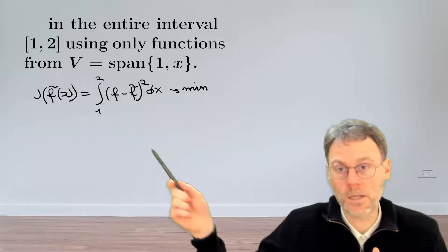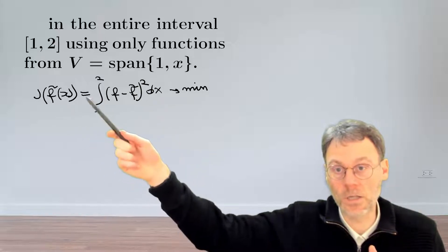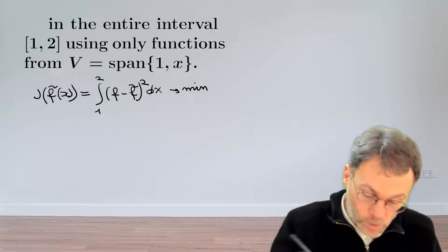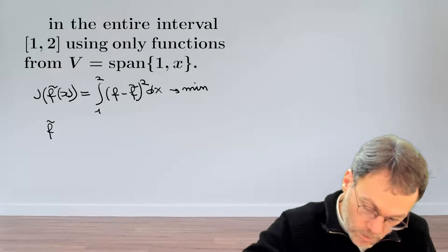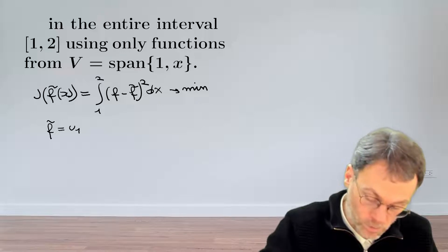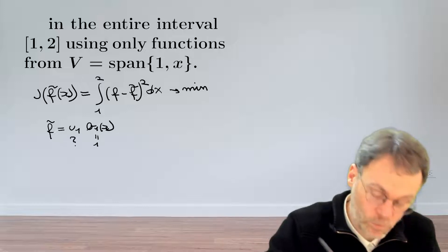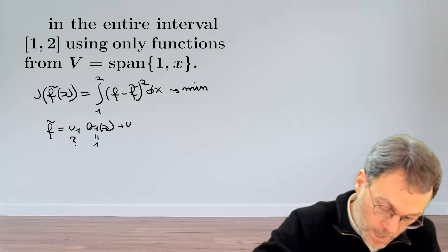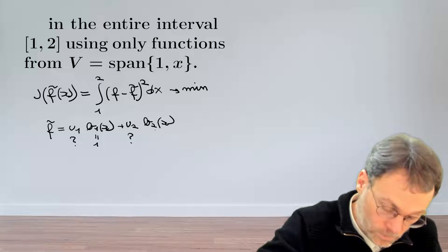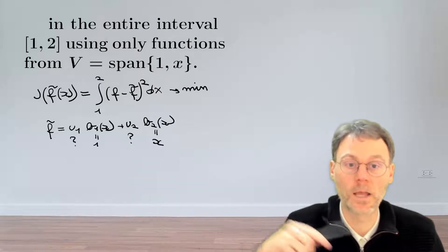The idea is to construct the best approximation f-tilde such that this functional — the difference between the function and its approximation — is minimized. We write our approximation as a sum of basis functions with unknown expansion coefficients. The first unknown coefficient u1 multiplies basis function b1 of x, which is just a constant. The second unknown coefficient u2 multiplies b2 of x, which is just x. The goal is to figure out what u1 and u2 are.